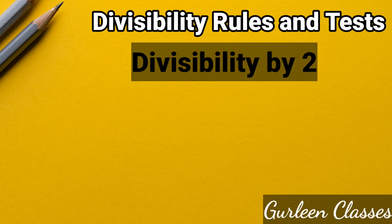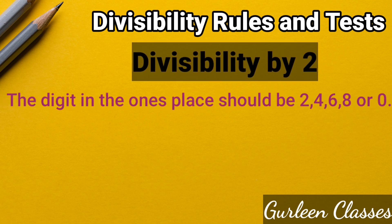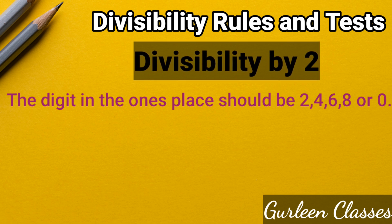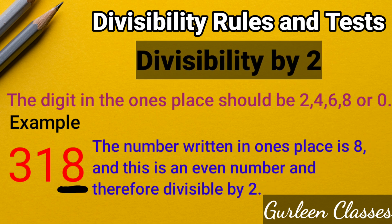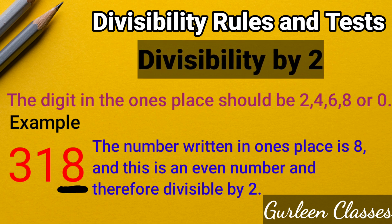Divisibility by 2: The digit in the ones place should be 2, 4, 6, 8, or 0 — it should be an even number. Example: the number 318. The digit in the ones place is 8, which is an even number, and therefore 318 is divisible by 2.